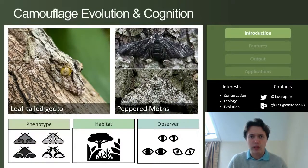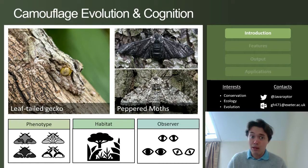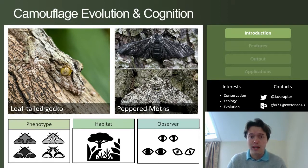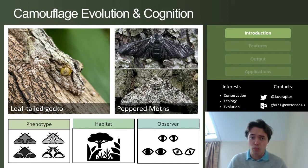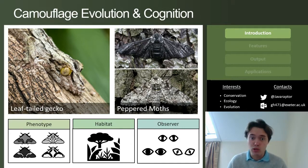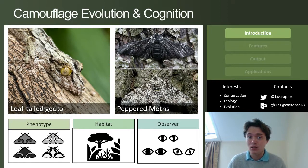Camouflage, rather ironically, is perhaps one of the most conspicuous examples of evolution by natural selection. Most animals possess camouflage because not being spotted by your predators stops you being eaten, and not being spotted by your prey helps you to eat.